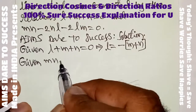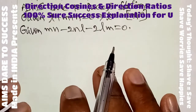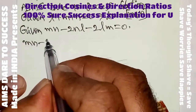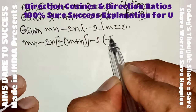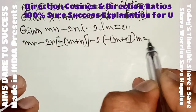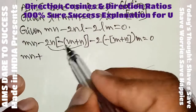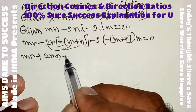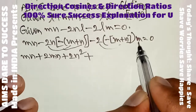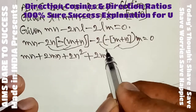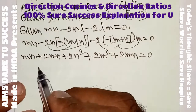The given second equation is mn minus 2nl minus 2lm equals 0. Substituting l equals minus(m plus n), we get: mn minus 2n times minus(m plus n) minus 2 times minus(m plus n) times m equals 0. Expanding: mn plus 2mn plus 2n squared plus 2m squared plus 2mn equals 0.